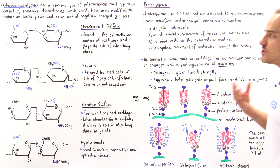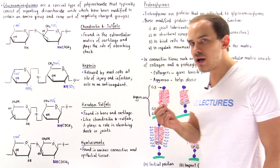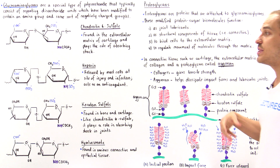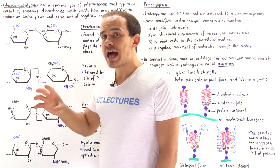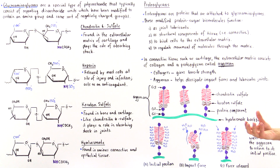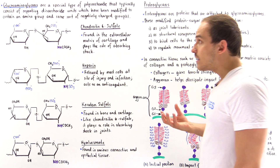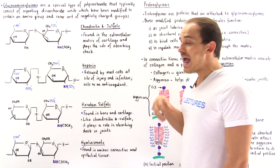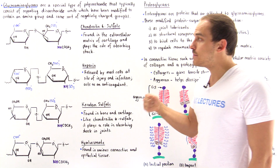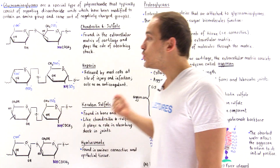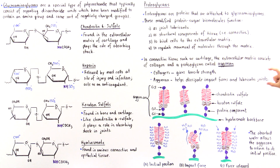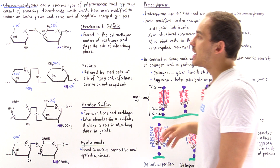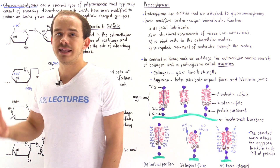A medical condition known as osteoarthritis basically causes the breakdown and degradation of these aggrecan molecules, and that is exactly what causes the pain associated with osteoarthritis. So we see that polysaccharides are very important molecules — they don't only act as energy storage sources, they also give us structure, lubricate our joints, and help absorb and dissipate the impact forces we experience on a day-to-day basis.